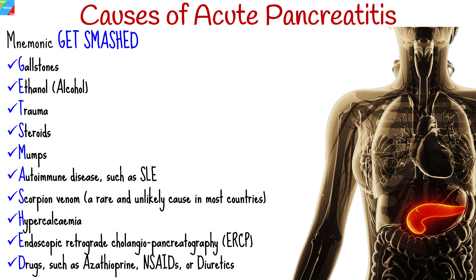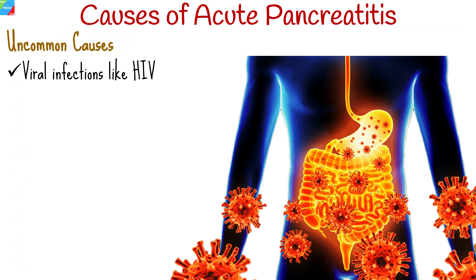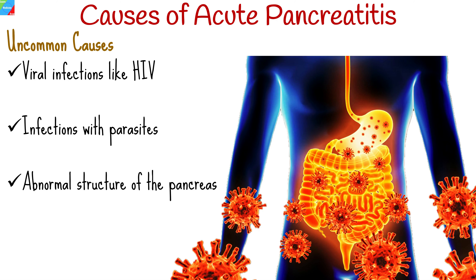Other uncommon causes of acute pancreatitis are viral infections like HIV, infections with parasites, abnormal structure of the pancreas, and hereditary pancreatitis — a rare form of pancreatitis which can be inherited from a parent.